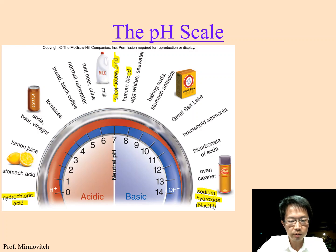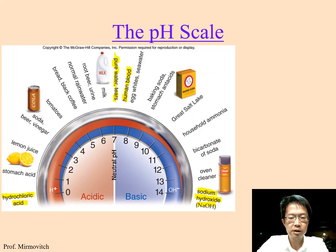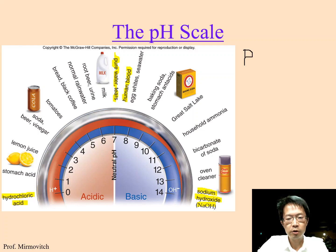Human blood — I want you to memorize this value. Human blood is actually not pH 7. Let me write it down: it's around pH 7.35 to 7.45.